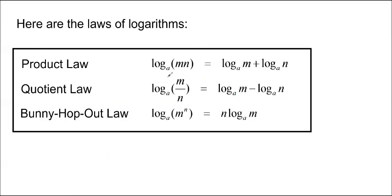Okay, so here are some of the log laws. Log base a of mn is equal to log base a of m plus log base a of n. For the quotient law, we have m over n. So it's minus in between and we call this the bunny hop law. It's based on the power rule. Log base a of m to the n. You bunny hop this guy out and it becomes n log base a of m. So those are the three rules and we're going to use them in some examples now.